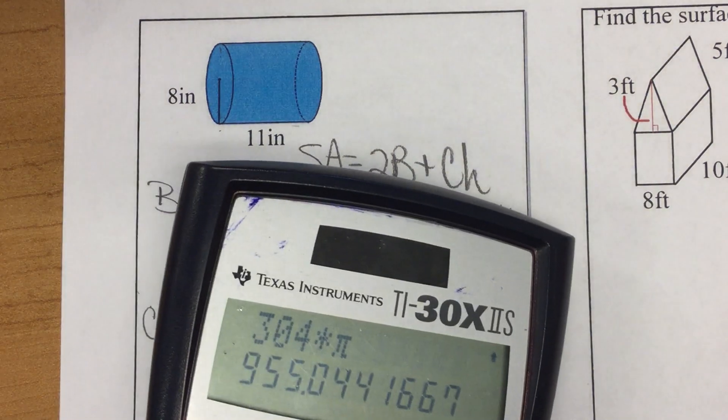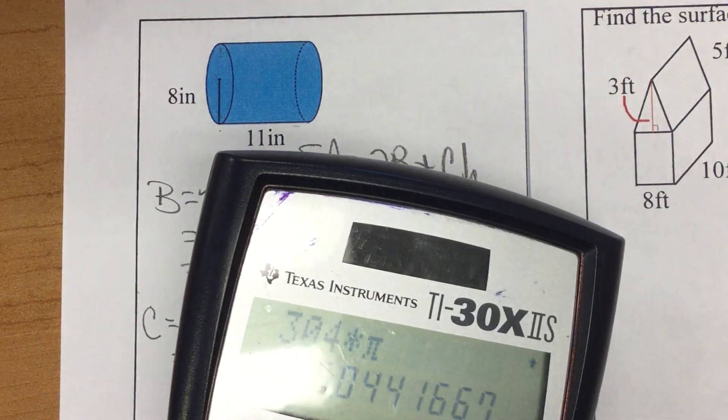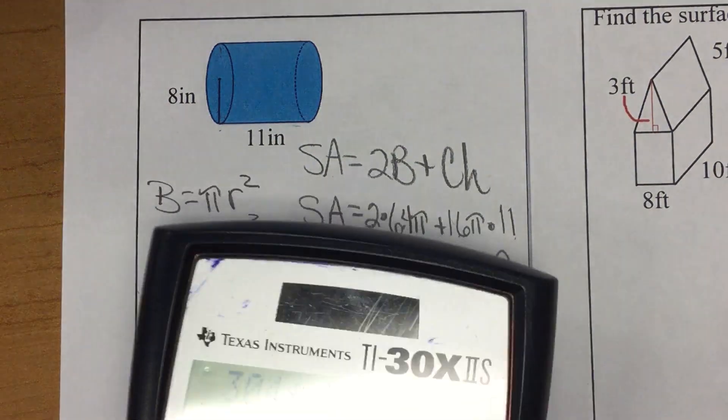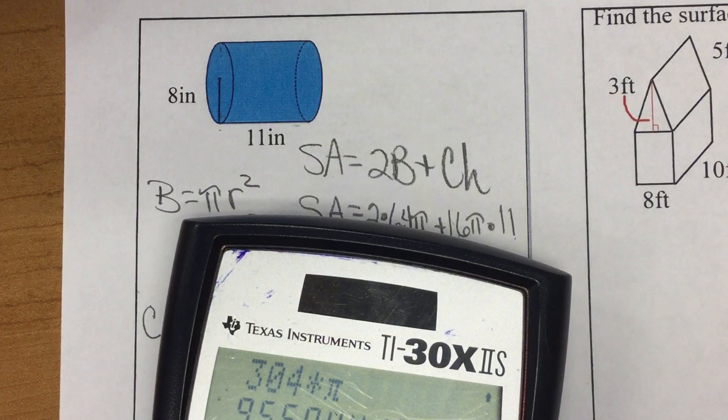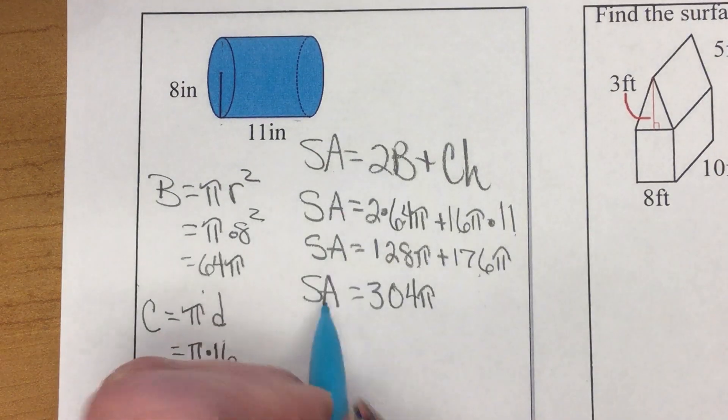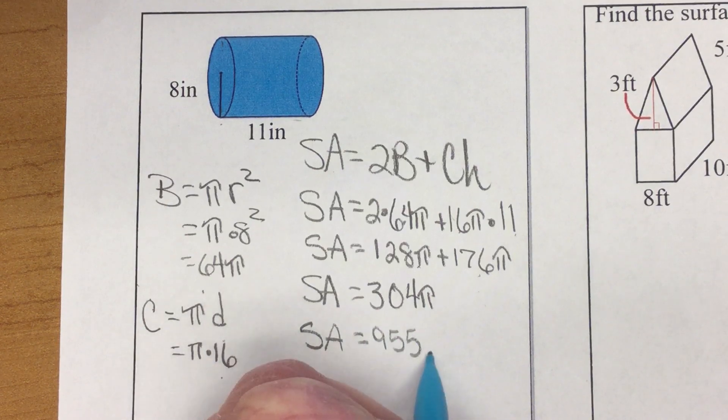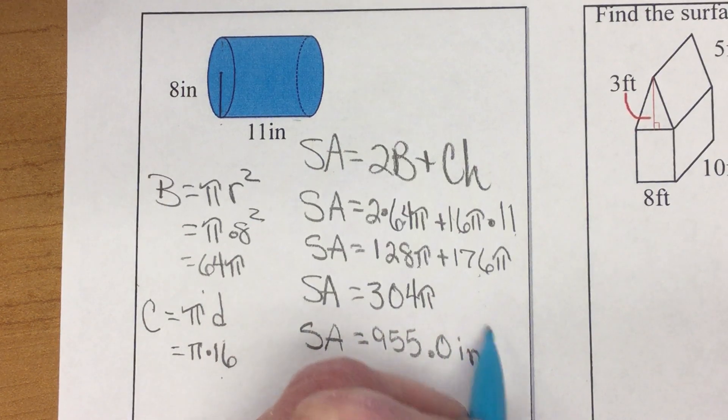I get a big, long answer. So, I'm going to round it to the nearest, what should we round to? Tenth? 955.0.